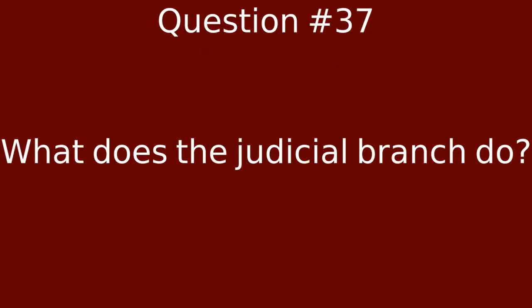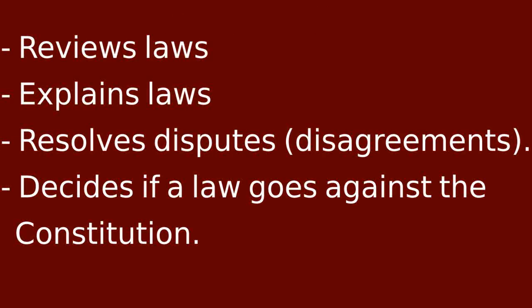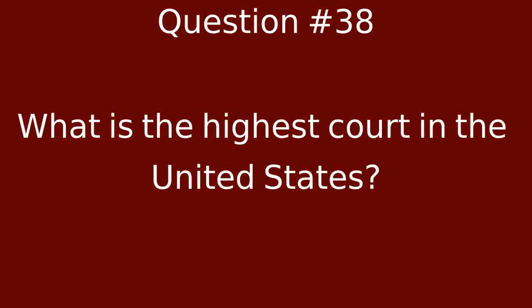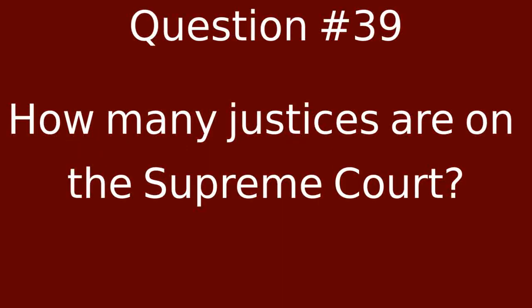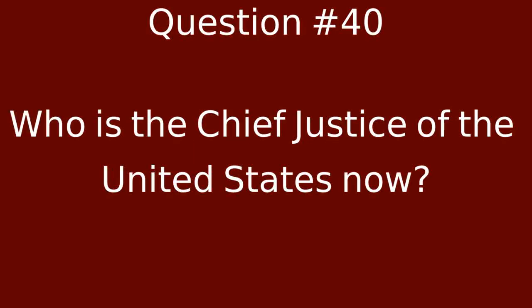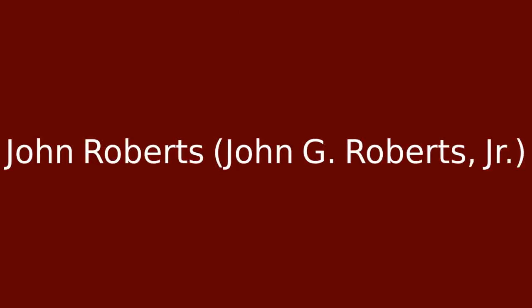What does the judicial branch do? Review laws. Explains laws. Resolves disputes and disagreements. Decides if a law goes against the Constitution. What is the highest court in the United States? The Supreme Court. How many justices are on the Supreme Court? Nine. Who is the chief justice of the United States now? John Roberts. John G. Roberts Jr.